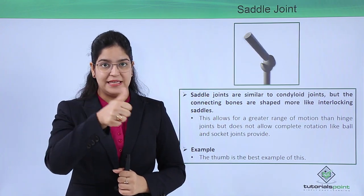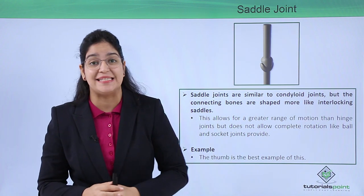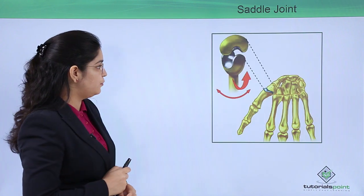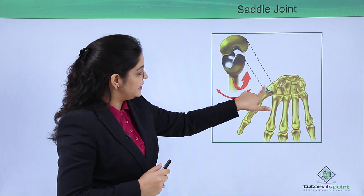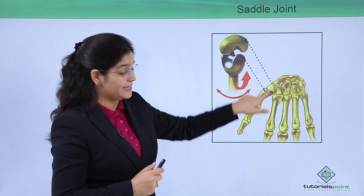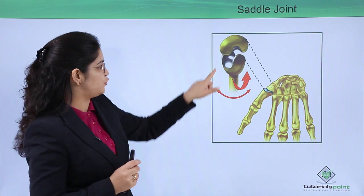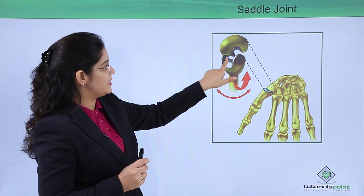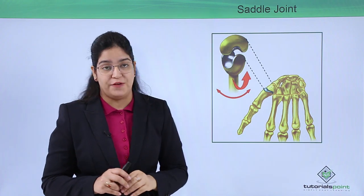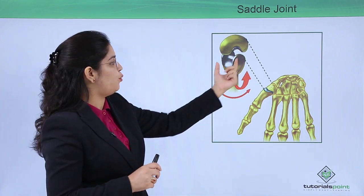Can you feel it? This is the best example of the saddle joint. Let's see more. Here you can see this connection is showing the saddle joint. One is concave, another is convex, and at the same time one is like the horseback and the other is like the saddle seat.